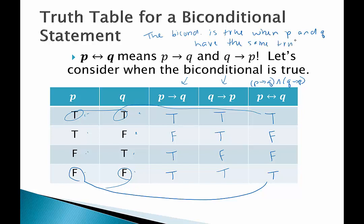So they're either both true or they're both false. If one's one and one's the other, that doesn't work. The biconditional is true when P and Q have the same truth value.